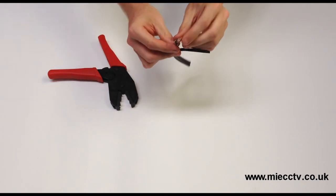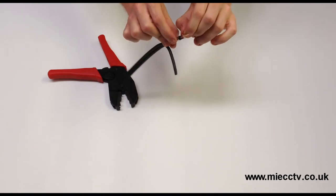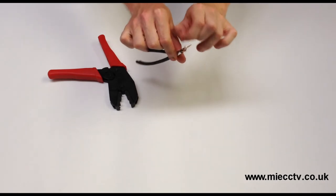Now place the body of the crimp over the end and ensure the braiding does not get trapped under the body when you push it down into position.